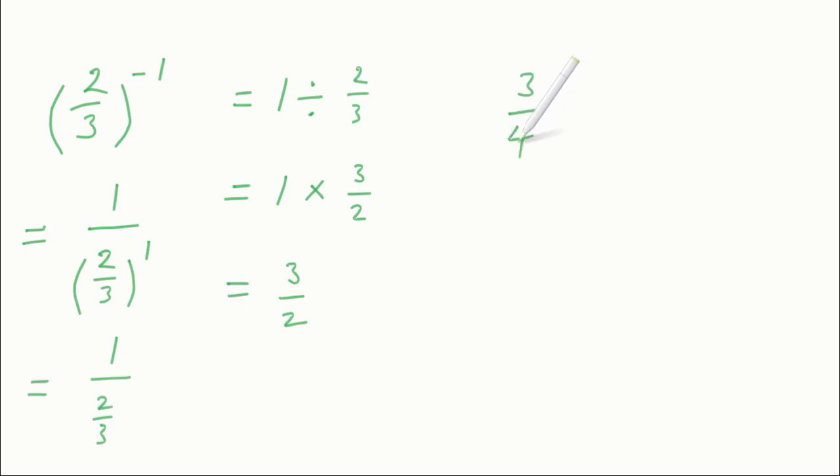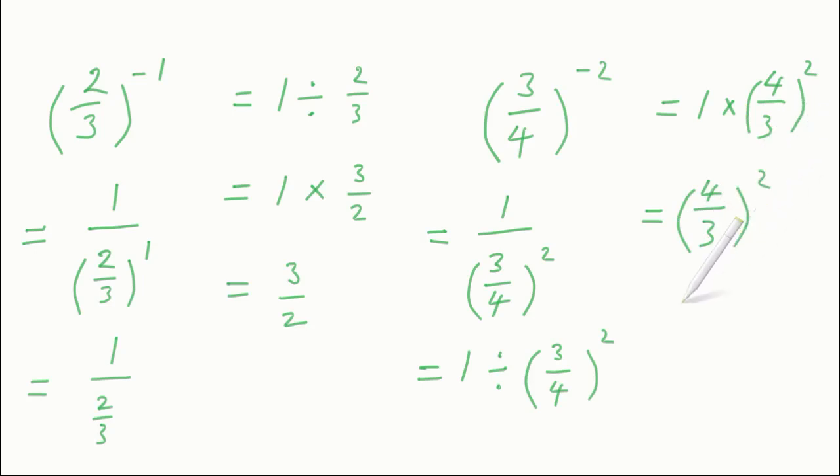If you had something like 3 quarters to the minus 2, that would be 1 over 3 quarters all squared. That's 1 divided by 3 quarters squared, which equals 1 times 4 thirds squared, changing the divide to times and flipping that fraction. That's really just 4 on 3 squared. If you were being asked to simplify it, you would square each number in the fraction: 4 squared over 3 squared. 4 squared is 16 and 3 squared is 9, so 16 ninths, which you could write as 1 and 7 ninths as a mixed number.